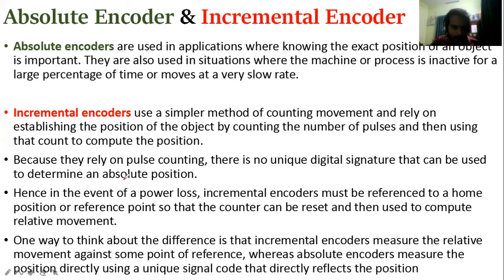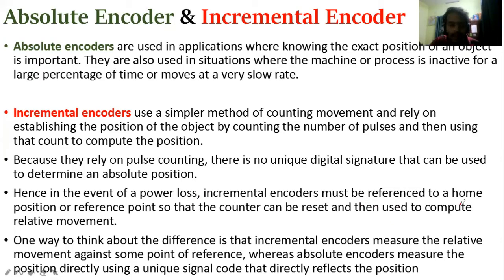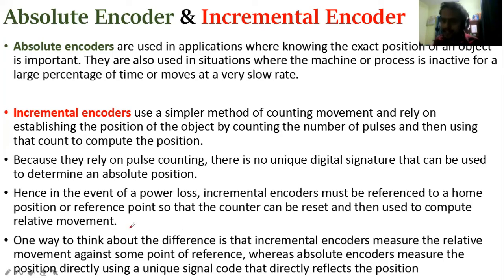At the end of a power loss event, incremental encoders must be referenced to a home position or reference point so that the counter can be reset, and this is then used to compute the relative movement.